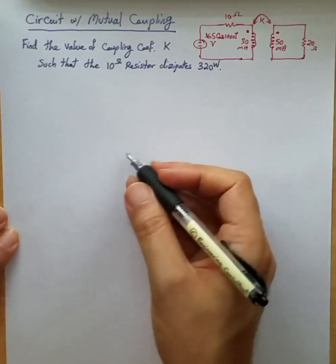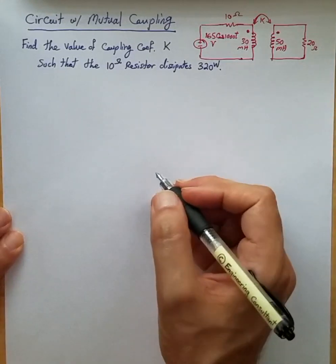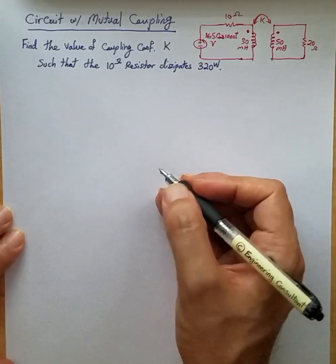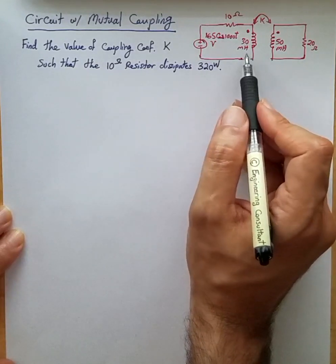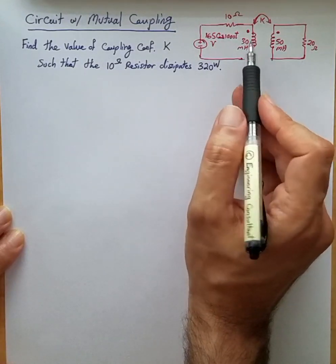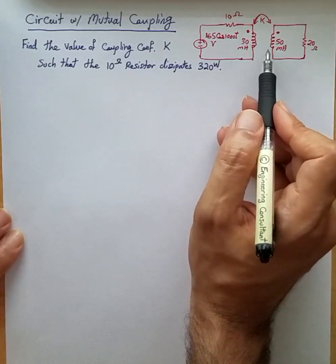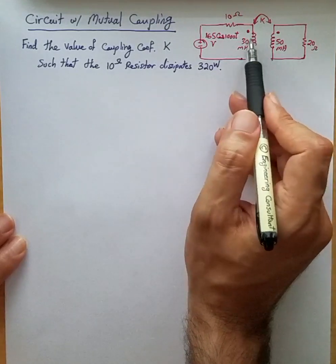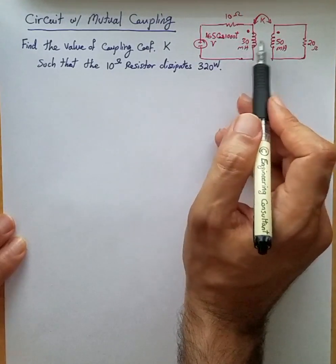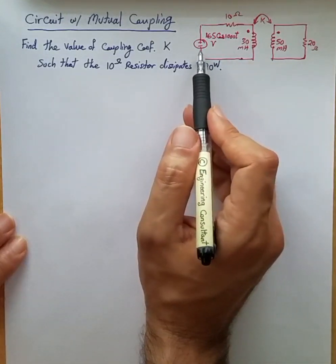An example of circuit with mutual coupling in sinusoidal steady state circuit analysis. In this circuit, a simple circuit is given with two inductors with mutual coupling. We have a 30 millihenry inductor and a 50 millihenry inductor, and there is a coupling coefficient k as an indication of mutual coupling between them, and there is the voltage source.